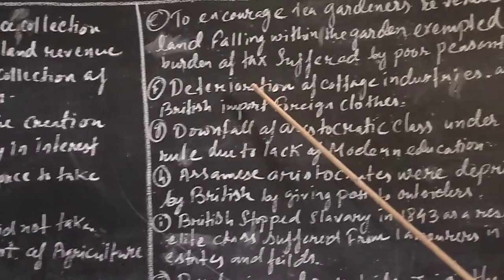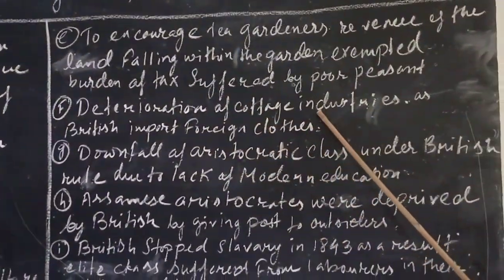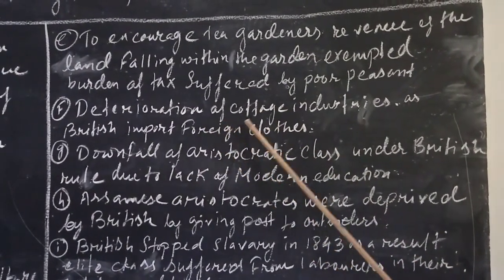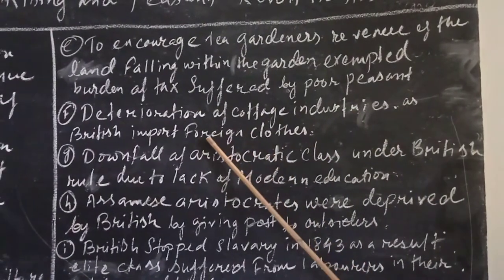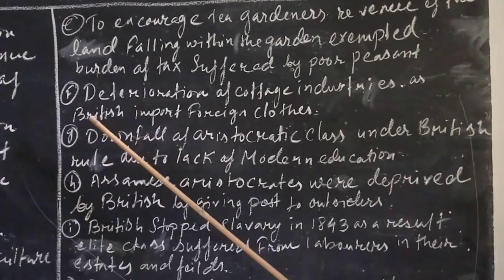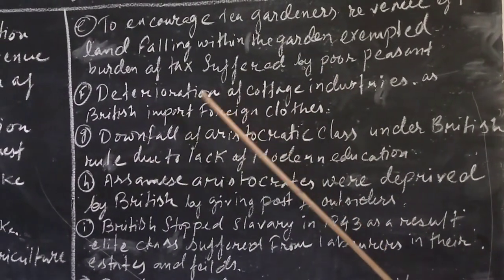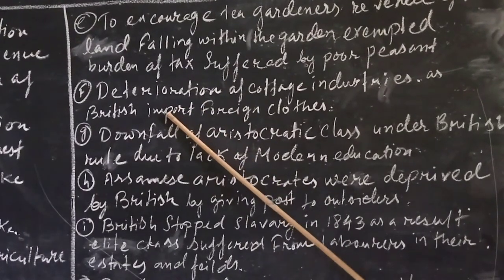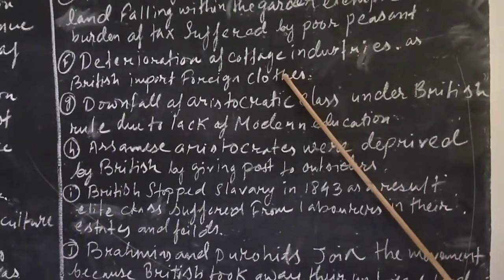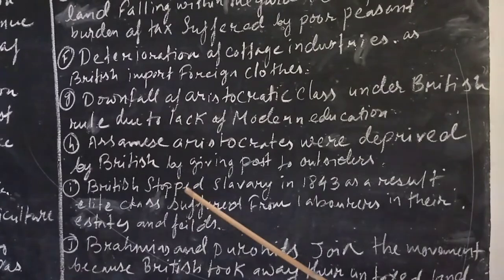The next reason: deterioration and decline of cottage industries. The cottage industries — small industries, handloom industries, small-scale industries — which were thriving in Assam at the time of British rule, declined because the British imported foreign clothes and other goods from their country. This was one of the reasons for the deterioration of cottage industries and also one of the reasons for the anti-British uprising.